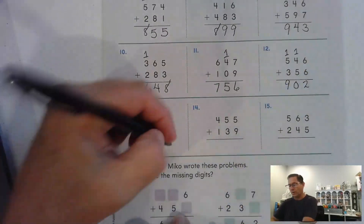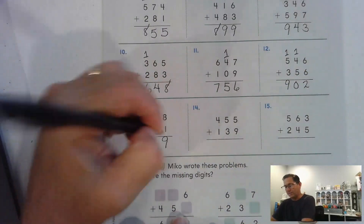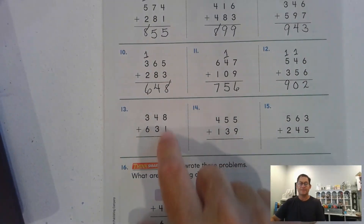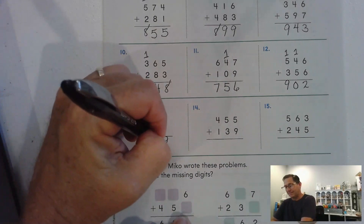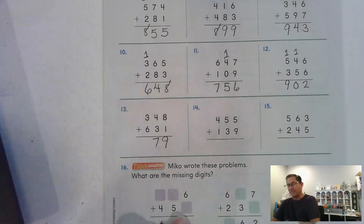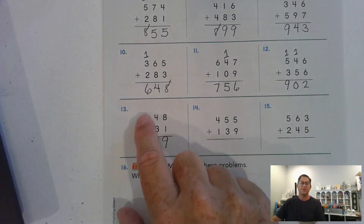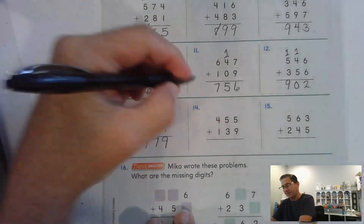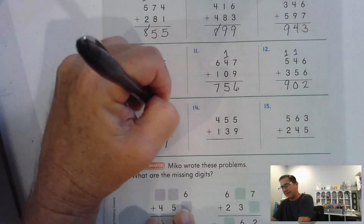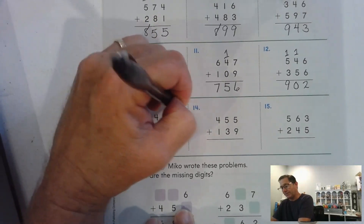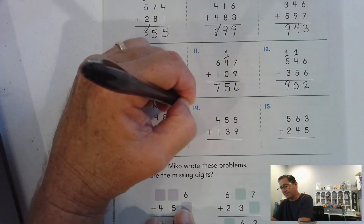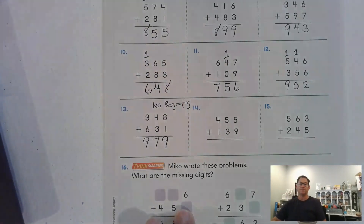Number thirteen: eight and one one is nine ones. Four tens and three tens, seven tens — we don't have to regroup. Six hundred and three hundred, nine hundred. Again, this problem we didn't have to regroup — no regrouping in that problem, so we don't see any regrouped marks or numbers up here.